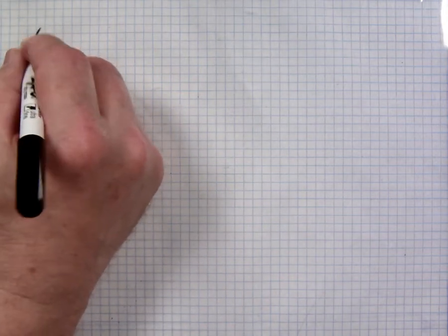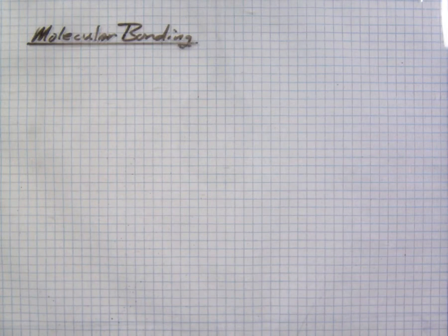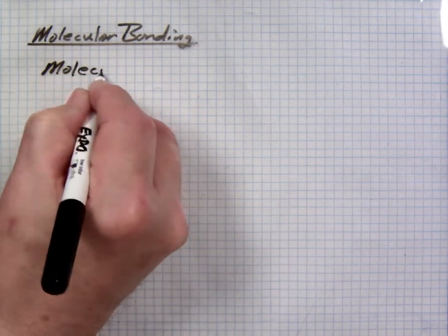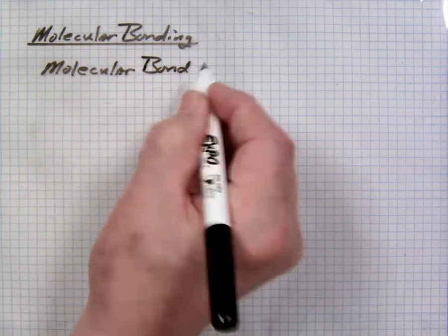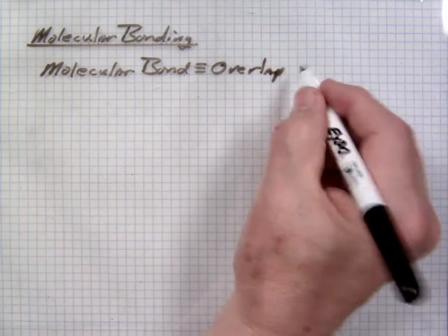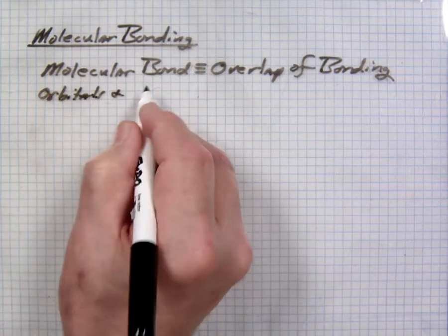In our last lecture we introduced covalent bonding and the concept of how elements come together and form molecular compounds. This concept is molecular bonding. In molecular bonding, in contrast to formation of ionic compounds, elements combine by the overlap and sharing of electrons. A molecular bond is the overlap of bonding orbitals and sharing of electrons.